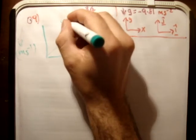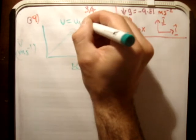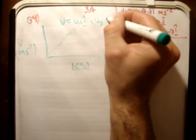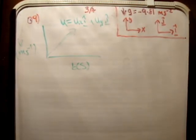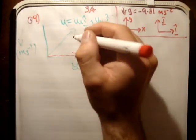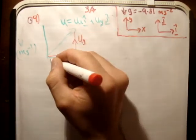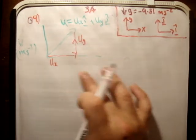So u is equal to u sub x i hat plus u sub y j hat. It's the resultant vector. So we need to resolve it into its two component unit vectors. This is u sub y and this is u sub x.